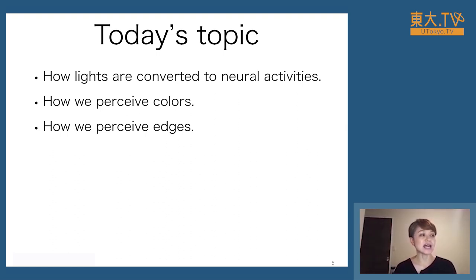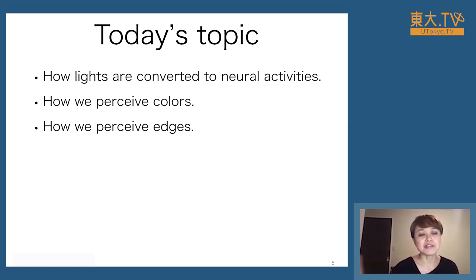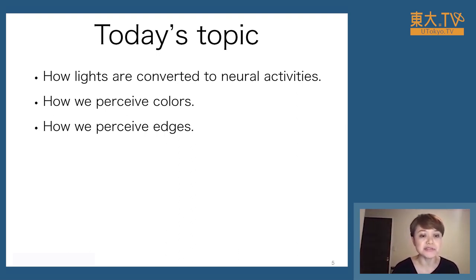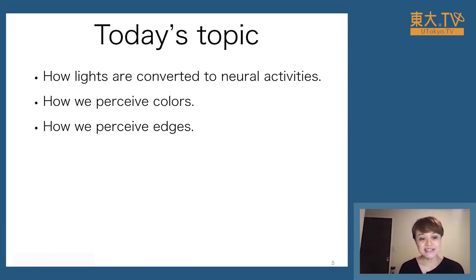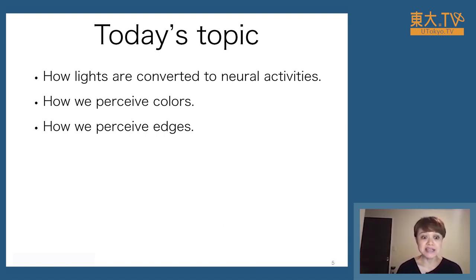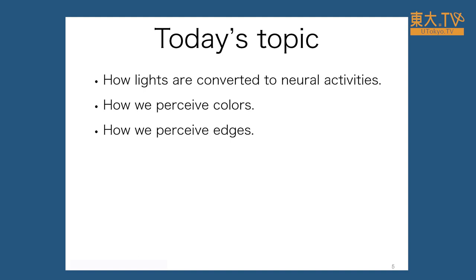Today I want to talk about how lights are converted to neural activities, how we perceive colors, and how we perceive edges of an object. I'll only talk about vision, but all sensory perception is a process of converting external information into neural activities, which we then interpret as our perceptual experience. For example, sound is a wave traveling through air that we convert using our ears, and taste is converting molecules in food into neural activities. Through visual perception I hope you'll see the wonderful world of perception in general.